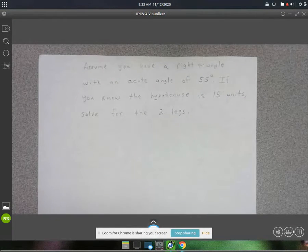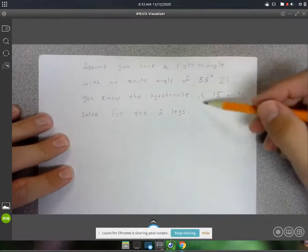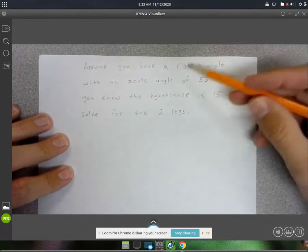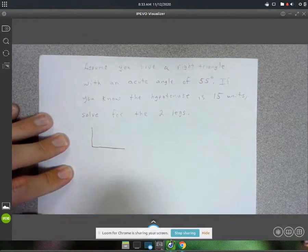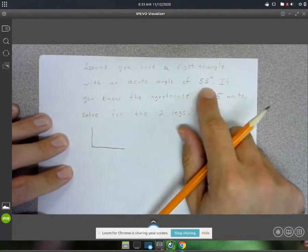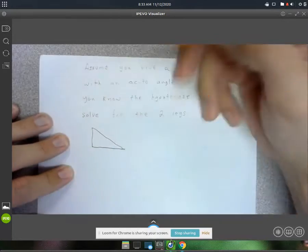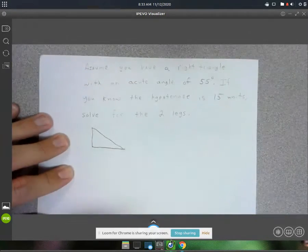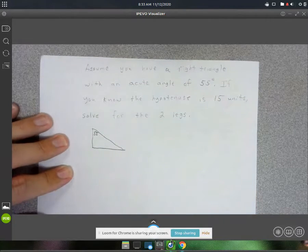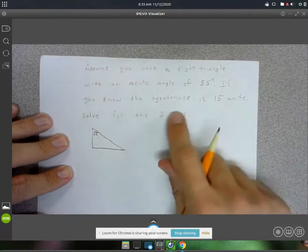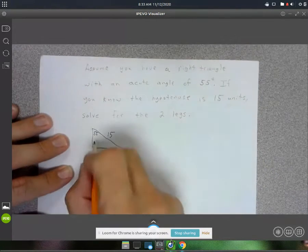All right, here we're going to use sine, cosine, and tangent to solve a triangle. Assume you have a right triangle with an acute angle of 55 degrees. I'll call this one 55 degrees. If you know the hypotenuse is 15 units long, solve for the other two legs.